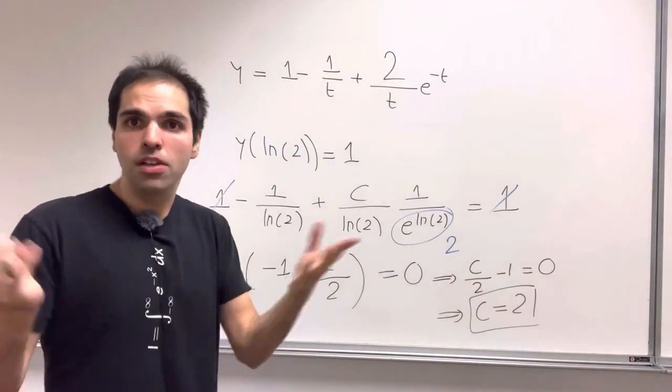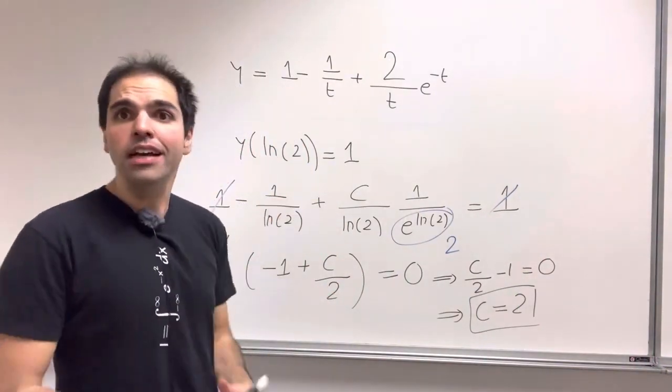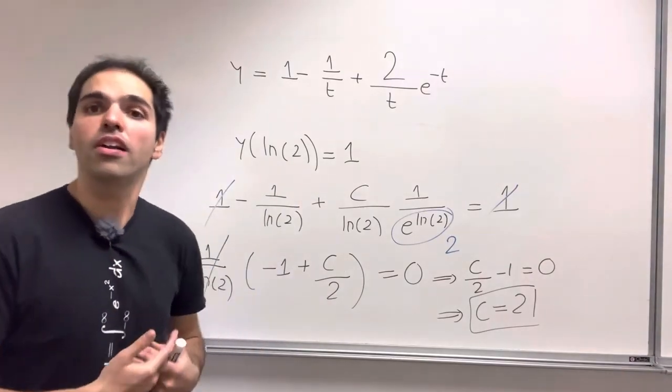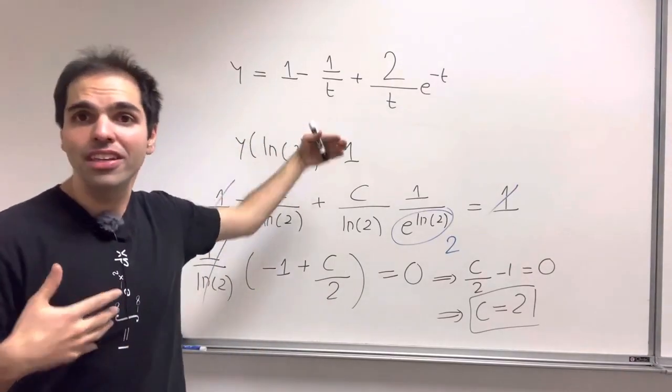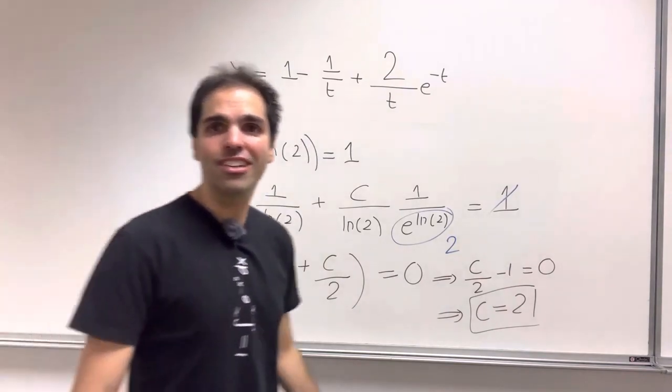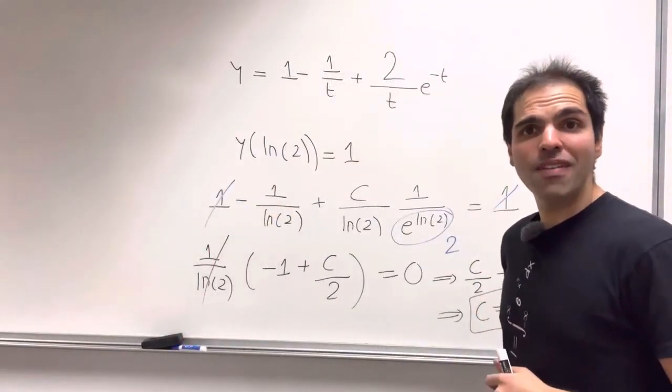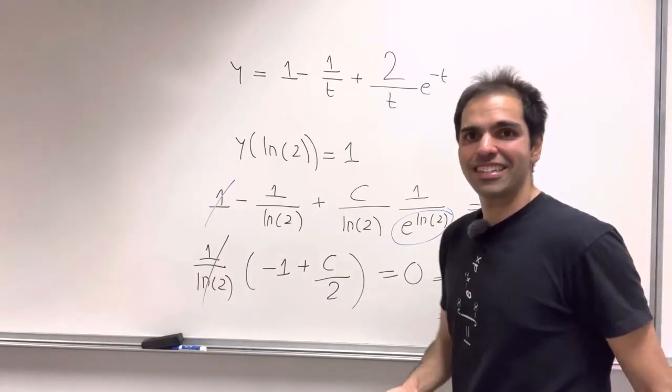So in other words, I want to recap the magic of integrating factors is that once you multiply by this clever function, e^(integral of p), then the left-hand side turns into a derivative using the product rule, which then you can integrate, and then you can solve for your function. All right, I hope you like this. If you want to see more math, please make sure to subscribe to my channel. Thank you very much.